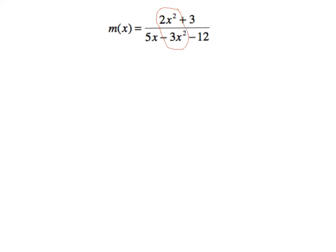So 2x squared and negative 3x squared are the terms we want to focus on. And dividing those lead coefficients tells us that the horizontal asymptote for this function is at y equals negative two-thirds.